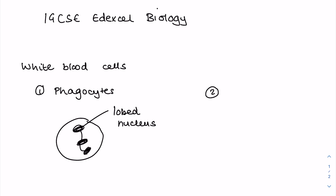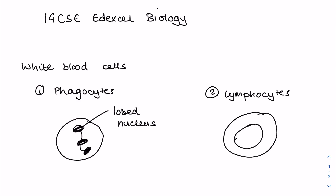With the lymphocytes, which remember produce antibodies, there's no need for a lobed nucleus, so instead you end up with quite a large nucleus. So if you're asked to spot these cells in a blood sample, this is the sort of thing you need to be looking out for.